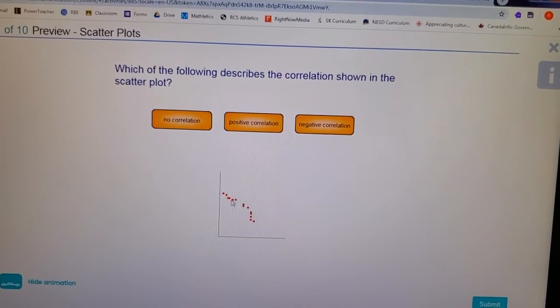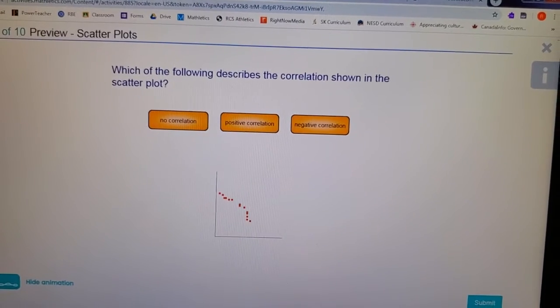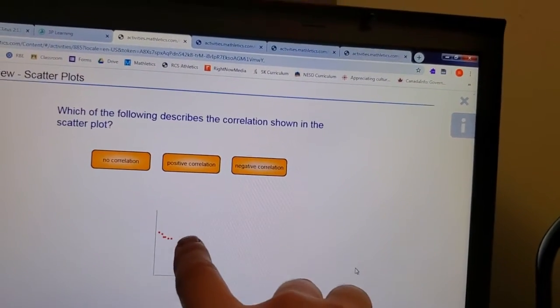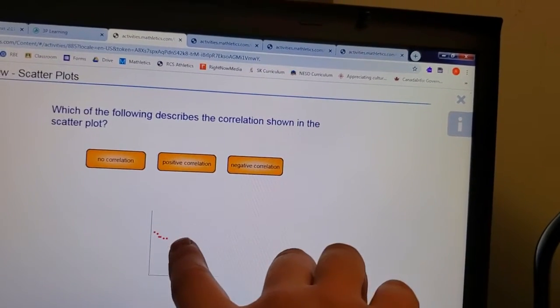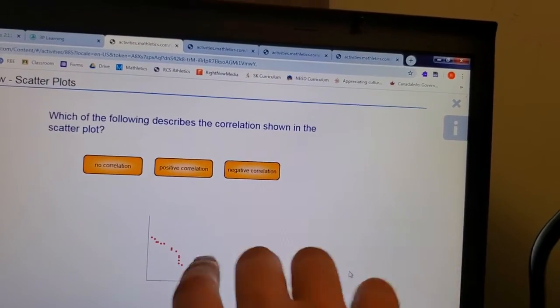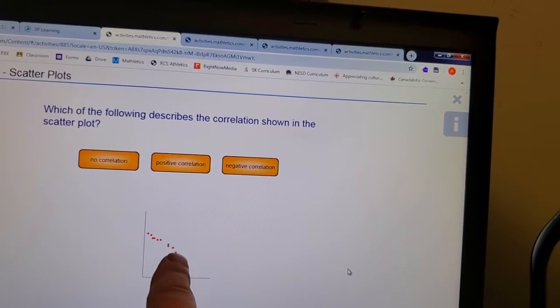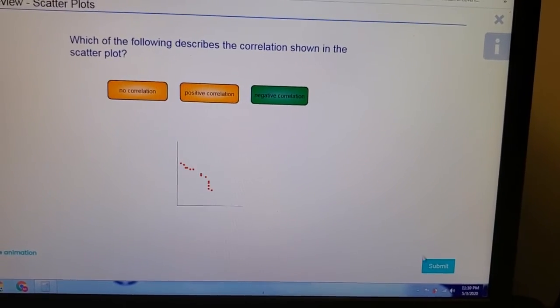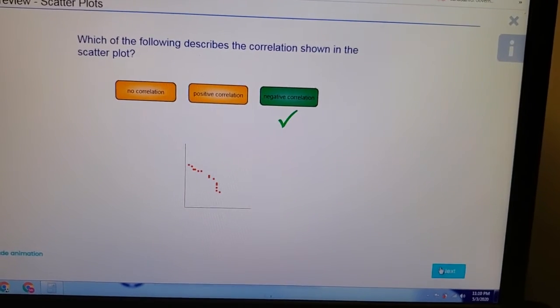No correlation would be if these dots were all over the place. Positive correlation is if it's increasing when it goes from left to right, so it looks like they're almost making a line, not a perfect line. Negative correlation is this one here where it looks like they're slowly getting less and less as you go from left to right, so that should be negative.